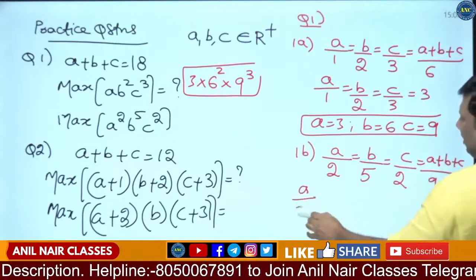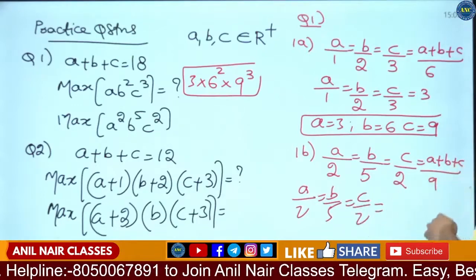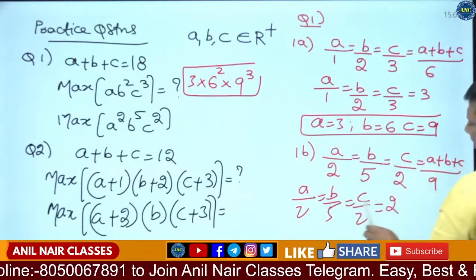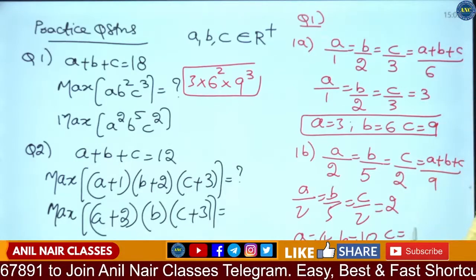So A by 2 is equivalent to B by 5 is equivalent to C by 2. A plus B plus C is 18. 18 by 9 is 2. So A will be 4, B will be 10, and C will be 4.